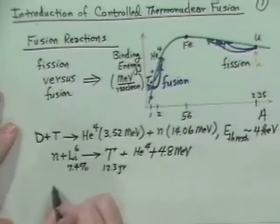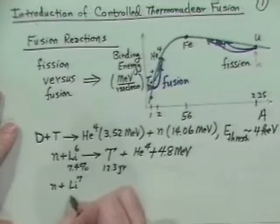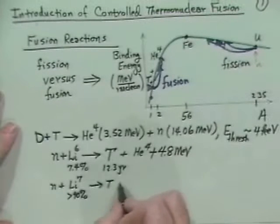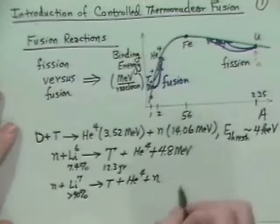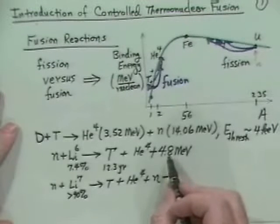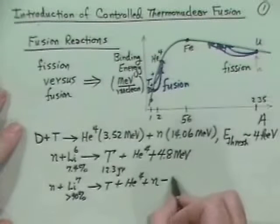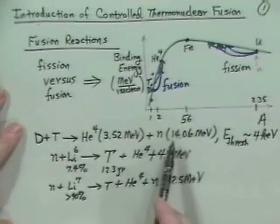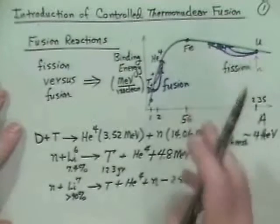That reaction goes to a triton with a 12.3-year half-life, plus an alpha particle (helium-4), plus 4.8 MeV. The other prominent isotope of lithium, lithium-7, which is the greater than 90% isotope, can also go to a triton plus helium-4 plus a neutron — you get your neutron back. The trouble is that in contrast to the lithium-6 reaction, which is exothermic, this reaction is endothermic, with a loss of 2.5 MeV.